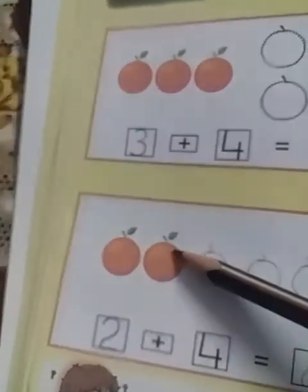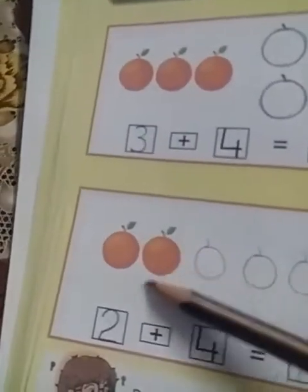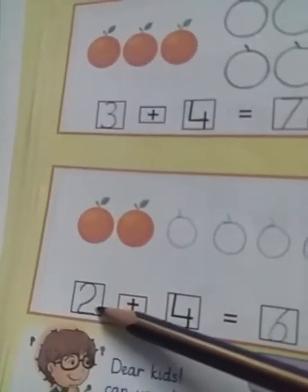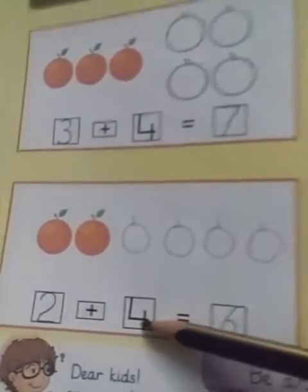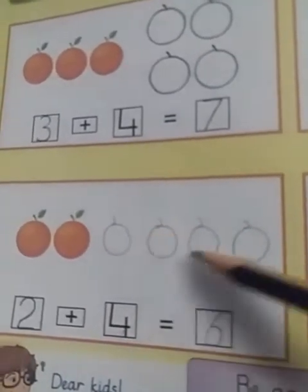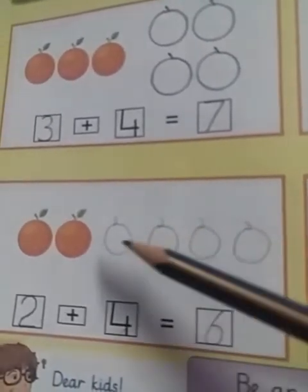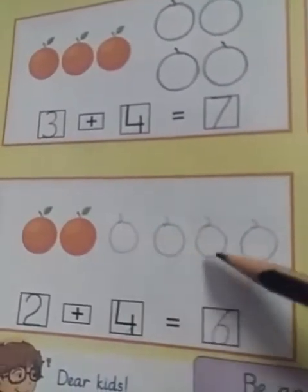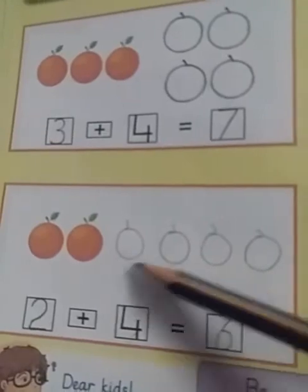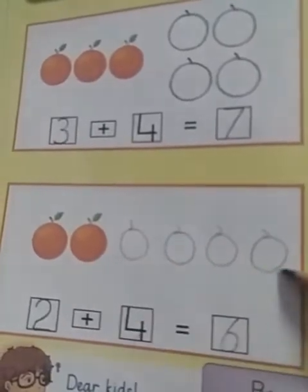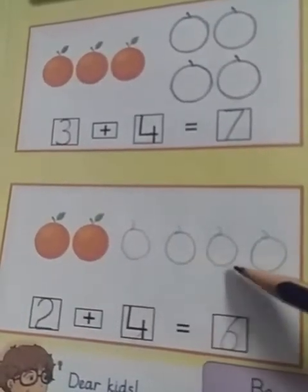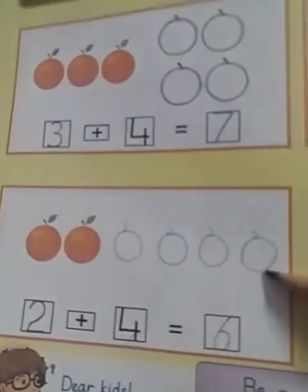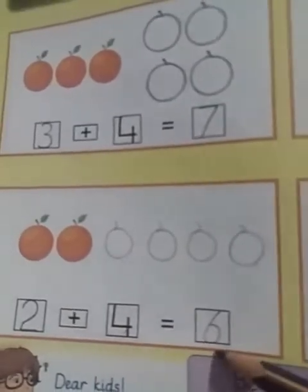Here are only two oranges — one, two. Write here two, and add four more. Make four oranges: one, two, three, four. How many oranges altogether? One, two, three, four, five, six. Write here six.